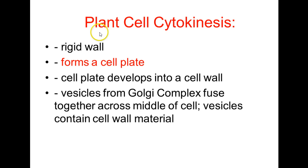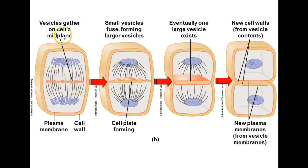In plant cytokinesis, it's a little different because there's a rigid wall. It forms what's called a cell plate, which develops into a new cell wall. Vesicles from the Golgi complex fuse together — these vesicles contain cell wall material — and it forms a double-layer membrane with cell wall material in between, forming a new cell wall.